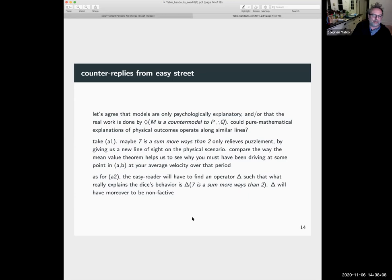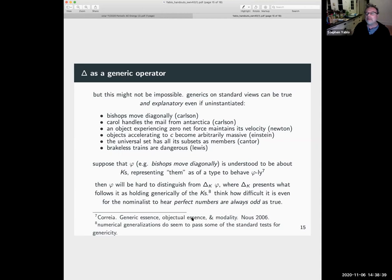As for the second point, the one about could a modalized version of the mathematical claim be enough? Well, we need to find an operator, delta, such that what really explains the Dice's behavior is delta seven is a sum more ways than two, and delta will have to be non-factive. And I want to say this might not be impossible. Generic claims are on standard views capable of being true and explanatory, even if uninstantiated.